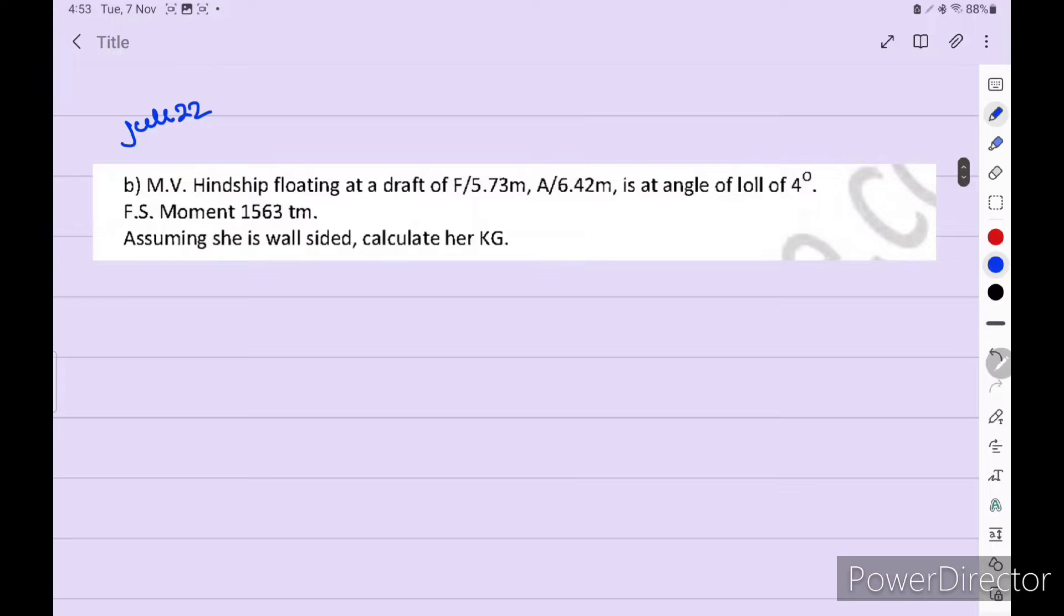And BM is equal to KM minus KB is equal to BM. And the second formula is this one. GM at angle of loll, 2 into initial GM into sec angle of loll. So our first is July 22. So MV Handship floating array draft forward 5.73 meters, aft 6.42 meters. Is at angle of loll, 4 degree.